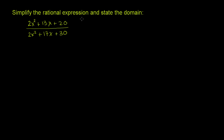Simplify the rational expression and state the domain. We have a rational expression here, one expression being divided by another one. To simplify it, we will factor the top and bottom expressions, and there are probably common factors we can cancel out — but we have to be very careful about how we do that.